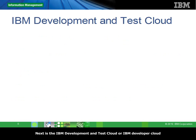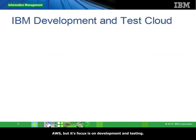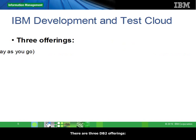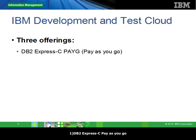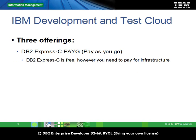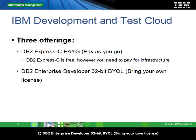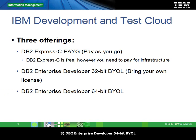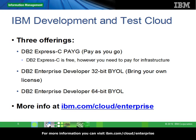Next is the IBM Development and Test Cloud, or IBM Developer Cloud for short. The IBM Developer Cloud provides similar services as AWS, but its focus is on development and testing. There are three DB2 offerings: DB2 Express-C Pay As You Go, where DB2 Express-C is free but you pay for the infrastructure; DB2 Enterprise Developer 32-Bit Bring Your Own License; and DB2 Enterprise Developer 64-Bit Bring Your Own License. More information can be found at ibm.com/cloud/enterprise.